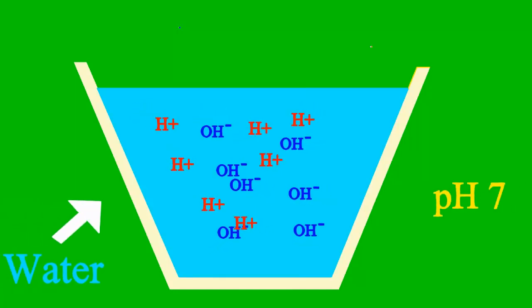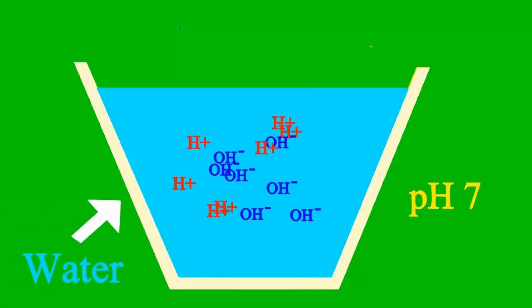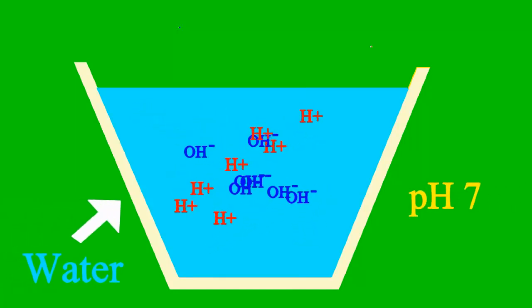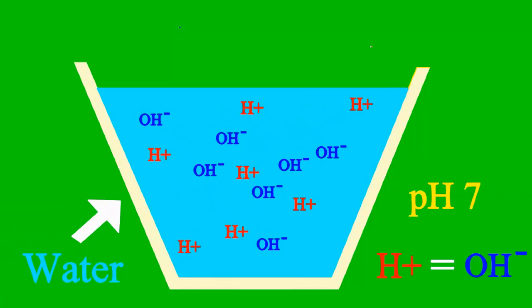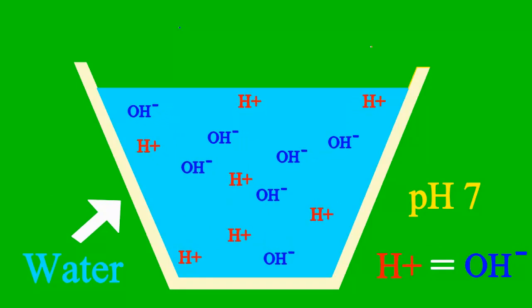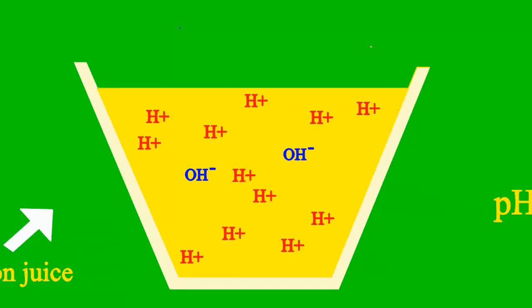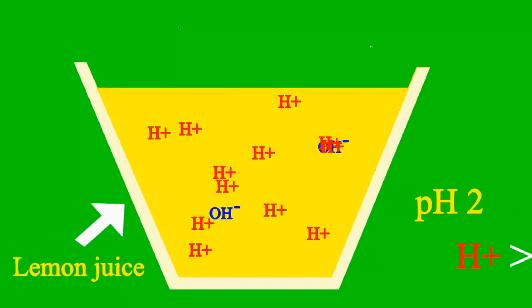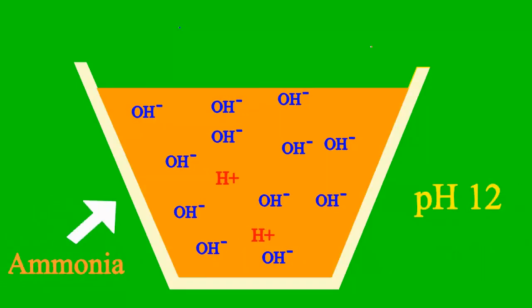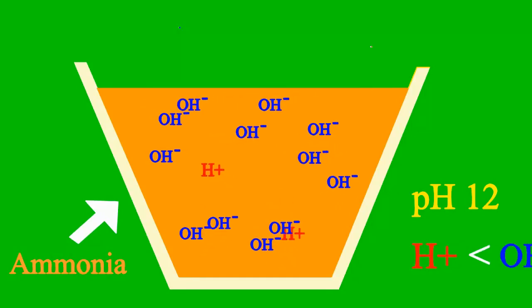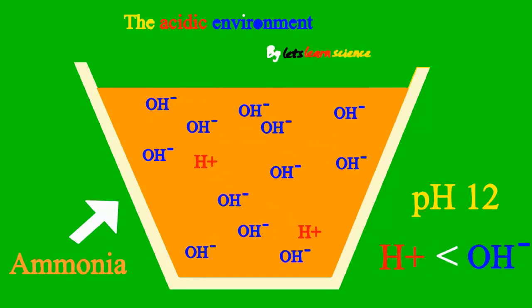When the pH is 7, the sample is neither an acid nor a base. But less than 7 it's an acid, and more than 7 it's a base.